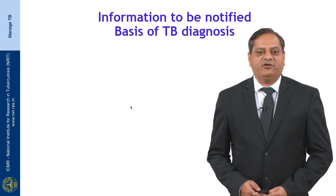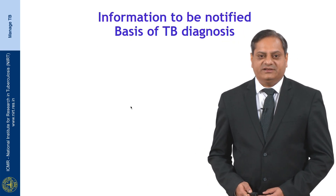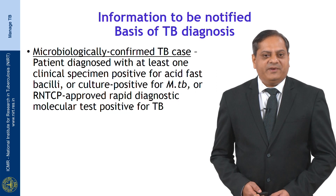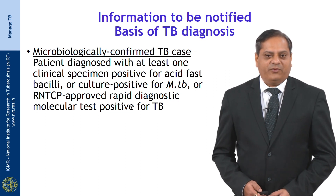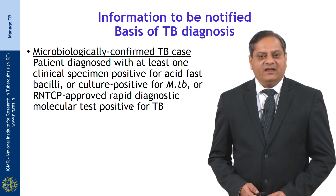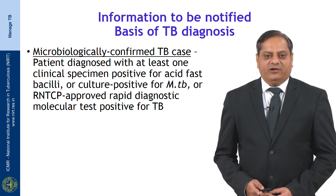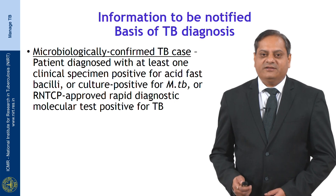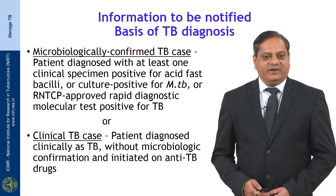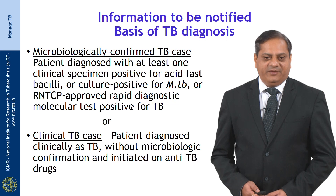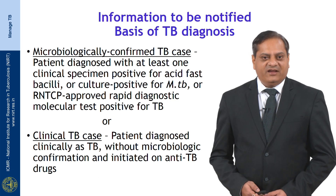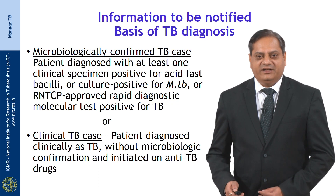What information is required to be notified? The basis of TB diagnosis falls into two types. First is microbiologically confirmed tuberculosis: a TB patient diagnosed with at least one clinical specimen positive for acid-fast bacilli, or culture positive for Mycobacterium tuberculosis, or an RNTCP-approved molecular diagnostic test positive for tuberculosis. Second is a clinical TB case: a patient diagnosed clinically as TB without microbiological confirmation and initiated on anti-TB drugs.